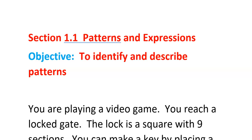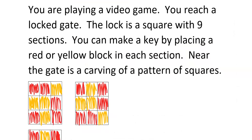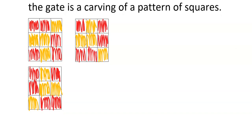Imagine you are playing a video game and you reach a locked gate. The lock is a square with nine sections. You can make a key by placing a red or yellow block in each section. Near the gate is a carving of a pattern of squares — here are the first three squares. We want to look at the squares to see how the pattern emerges and figure out what the eighth one in the pattern will be.